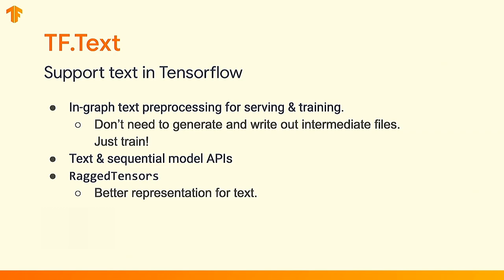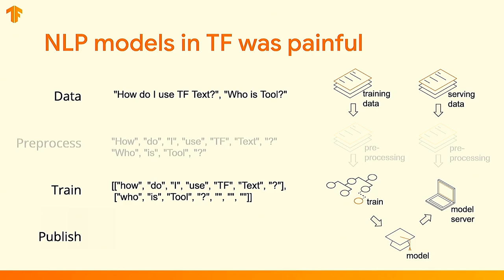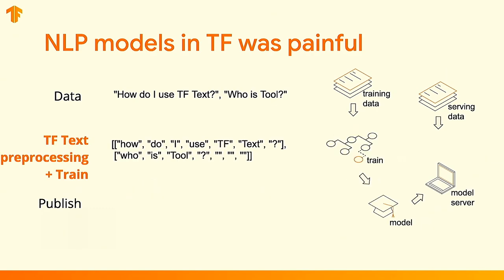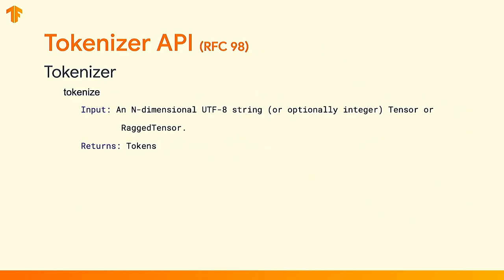Our charter was to make this as easy as possible to support text inside of TensorFlow. To do this, we want to do all the text processing in-graph. We do this through a series of text and sequential APIs that were not available before, and we created a new tensor type called RaggedTensors that better represents text. What we really want to do is just get rid of the preprocessing step — put everything in the graph — so all your preprocessing happens in-graph, and when you go to serve the model, you're not relying on the client to perform those same steps. The main thing that was missing was tokenization, so last year we had an RFC with the tokenizer API.